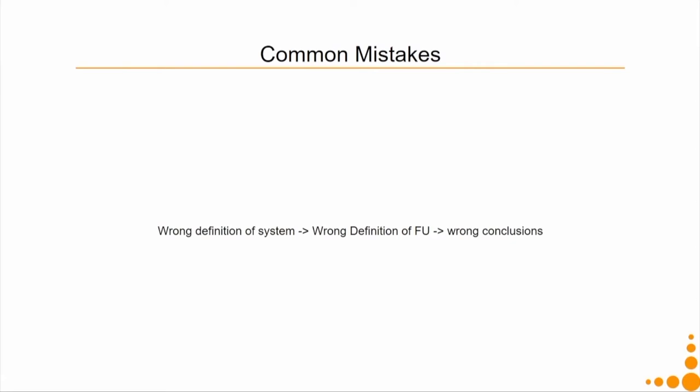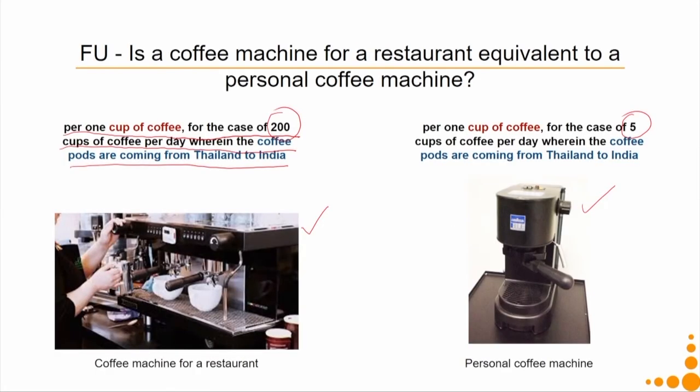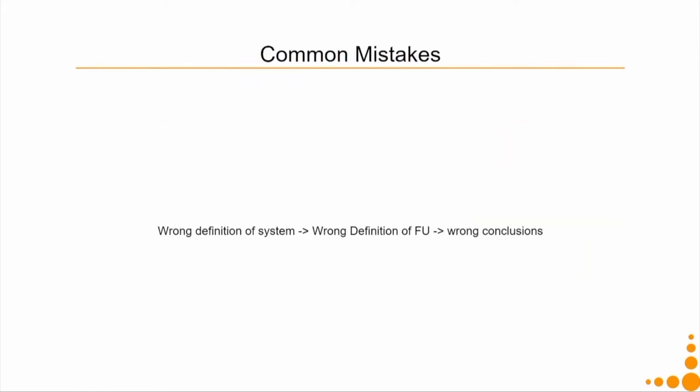A common mistake when considering functional unit is a wrong definition of the system. If we do not define the system properly — for example, machine A is for commercial use with certain system conditions, and machine B is for personal use with different conditions — we will go wrong in the definition of the functional unit and hence make wrong calculations. You can also go wrong with the system boundary.